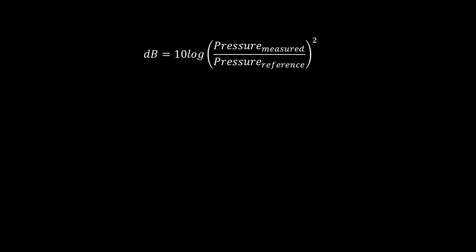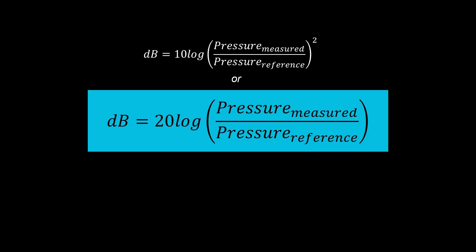If you want to calculate dB, it's 10 times the log of the pressure measured over the pressure reference squared. If you don't like working with squares, you can use some logarithm rules and simplify it to 20 log times the pressure measured over the reference pressure. And it's important to know that when we're measuring sound, pressure is an RMS, or a root mean square quantity. And the pressure reference is 20 micropascals, which is actually the quietest sound a human can perceive.